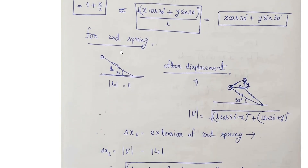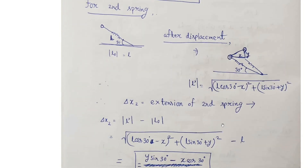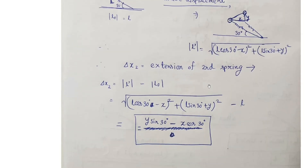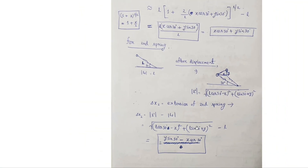Now for the second spring: initially it has this configuration, and after displacement x and y, you can see from the diagram that x is in the opposite direction for this spring. So the new length is √((l·cos30° − x)² + (l·sin30° + y)²). The minus sign for x and the plus sign for y are clear from the picture. Similarly, finding the extension |l′| − l and performing the same binomial expansion, we get δx₂ = y·sin30° − x·cos30°.